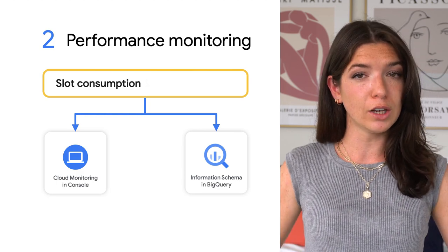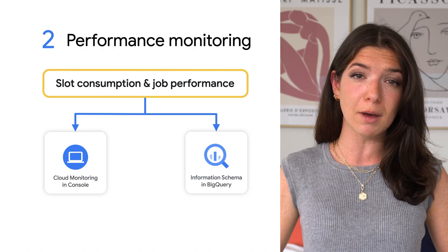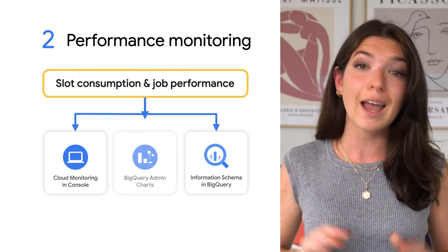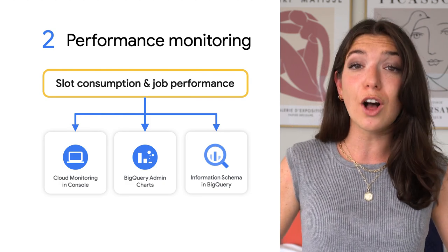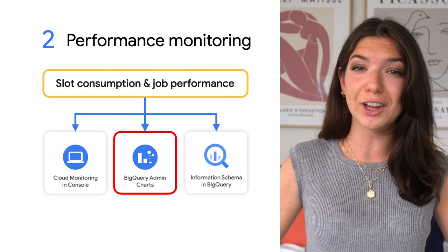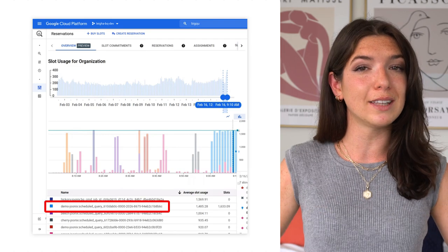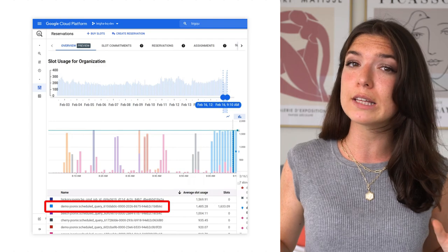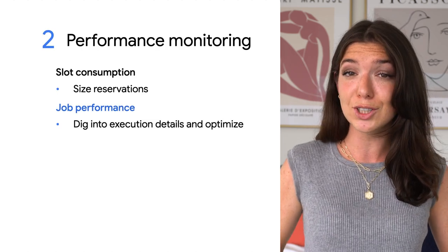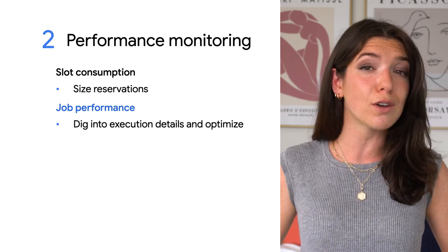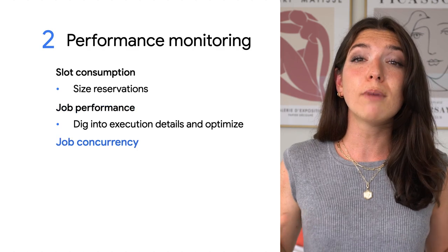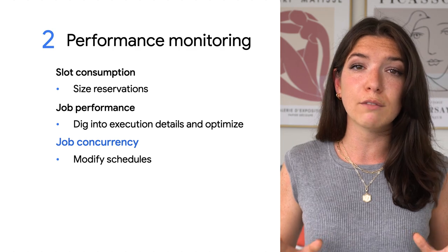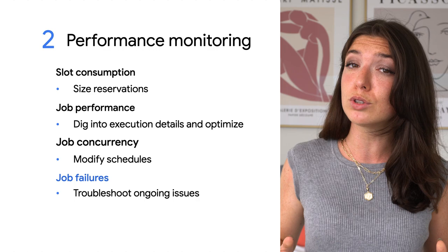You can always test out query performance with different numbers of slots to find the size that works best for your needs. Besides determining the size of your reservation, you may also want to use Cloud Monitoring or the information schema to monitor job performance. And if you're using slot reservations already, you can also use the new BigQuery admin resource charts. This data can help you pinpoint queries that should be optimized, like a scheduled query that seems to be consuming a lot of resources. With the job ID, you can get the execution details and use optimization techniques to figure out if you can rewrite the SQL to be more efficient. You might also want to dig into job concurrency to rearrange scheduling for optimal slot utilization, or fail jobs to help troubleshoot any ongoing issues.